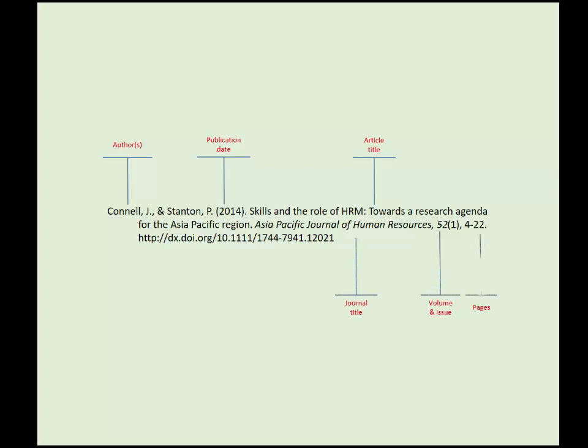Many articles like this one will also have a DOI. A DOI, digital object identifier, is a unique number assigned to scholarly journal articles. Not every article will have a DOI.